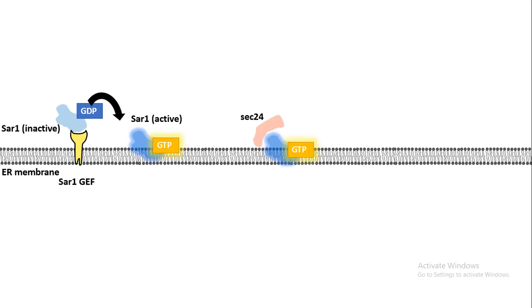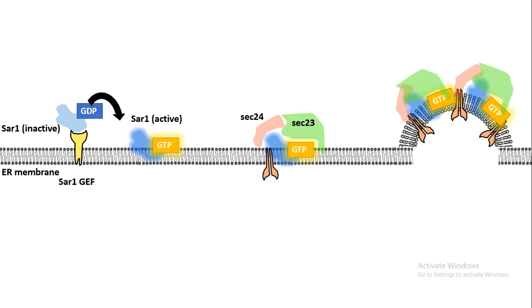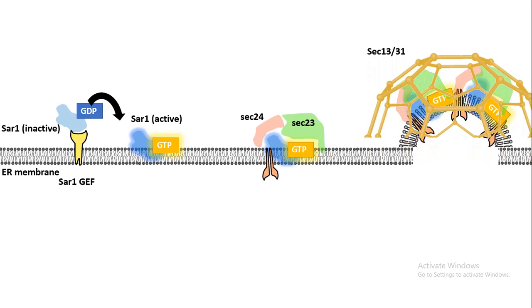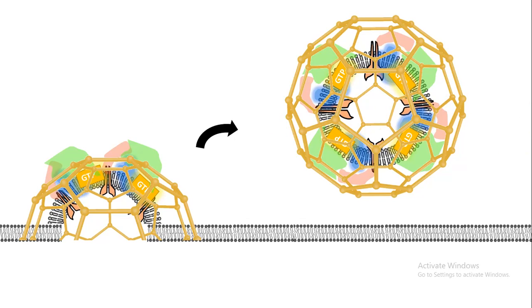SAR1 binds with other coat proteins such as SEC24 and SEC23 and helps to associate with the cargo. After that, other coat proteins such as SEC13 and SEC31 assemble and form the COP2-mediated coat, which ultimately leads to vesicle pinching and release of COP2-coated vesicles from the ER membrane. These vesicles are then ready to be delivered to the Golgi — comparable to trucks delivering goods from the production factory to the warehouse.